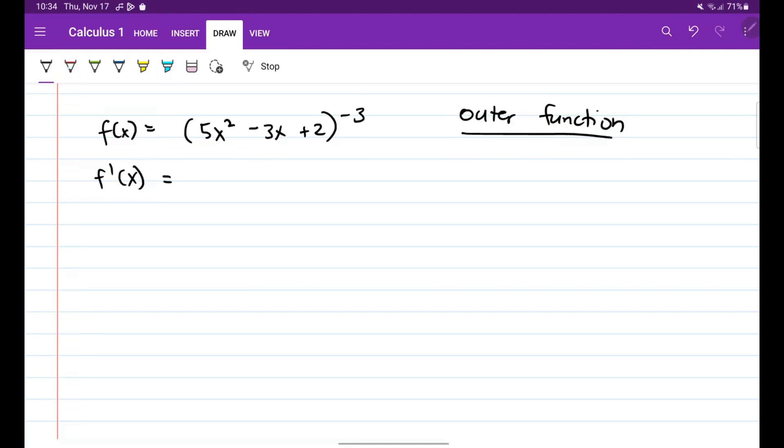And that is yung raised to negative 3. So kunan natin yung derivative na yun raised to negative 3. So bababa natin sya, so negative 3 times 5x squared minus 3x plus 2, then minus 1 natin yung exponent, so this will be minus 4.